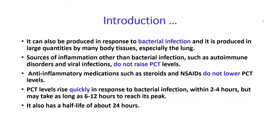Procalcitonin is also produced in response to bacterial infection, and it is produced in large quantities by many body tissues, especially the lungs. Sources of inflammation other than bacterial infection, such as autoimmune disorders and viral infections, do not raise procalcitonin levels. Anti-inflammatory medications such as steroids and non-steroidal anti-inflammatory drugs do not lower procalcitonin levels.